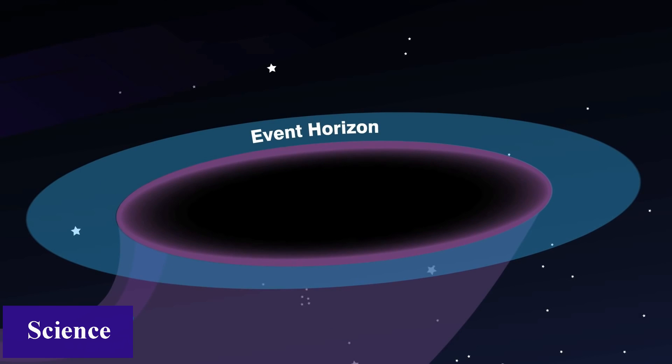This circle is known as the event horizon. An event horizon is probably what you are thinking of when you think of a black hole.